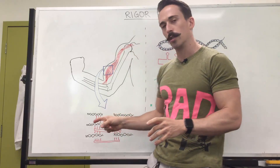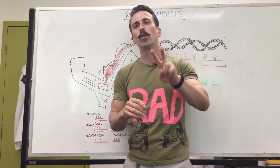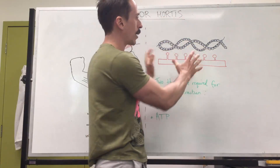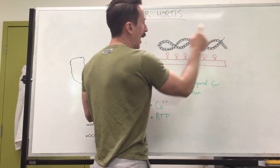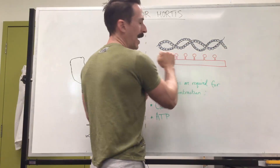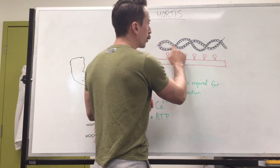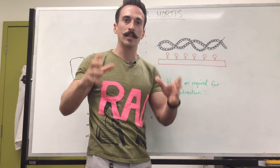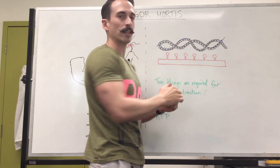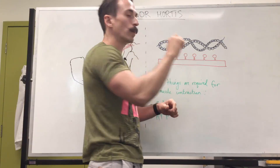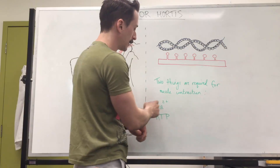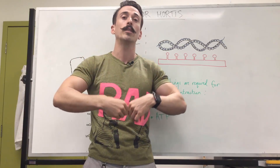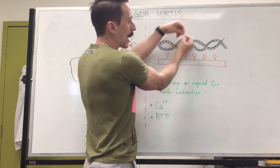In order for this contraction — called the sliding filament theory — to occur, we need two very important things: calcium and ATP. I've zoomed in on the two filaments here — the actin filament and the myosin filament with all the myosin heads. You can see I've drawn a blue line through the actin filament. This blue line acts like a bike chain — it doesn't allow the myosin heads to bind to the actin. It's locked in place. We need a key that unlocks this chain, and the key is calcium.